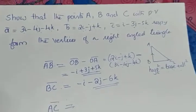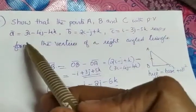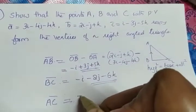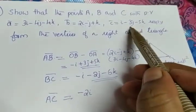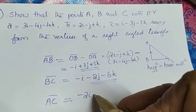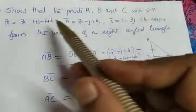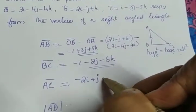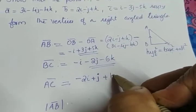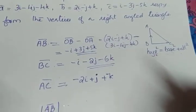We have one more side, vector AC, defined as position vector of C minus position vector of A. i minus 3i gives minus 2i. Minus 3j minus minus 4j gives minus 3j plus 4j which is plus j. And minus 5k minus minus 4k gives minus 5k plus 4k which is minus k. So vector AC is equal to minus 2i plus j minus k.